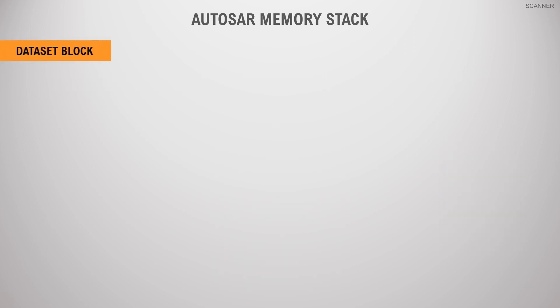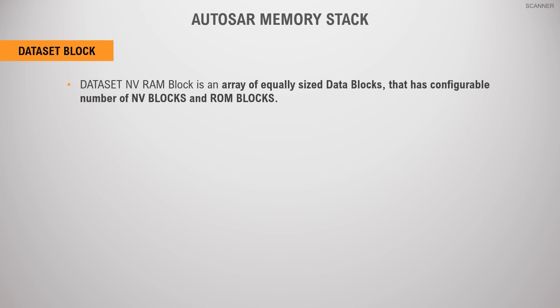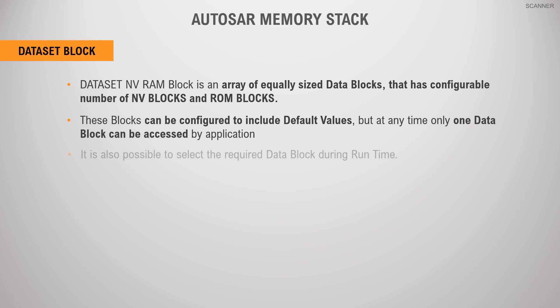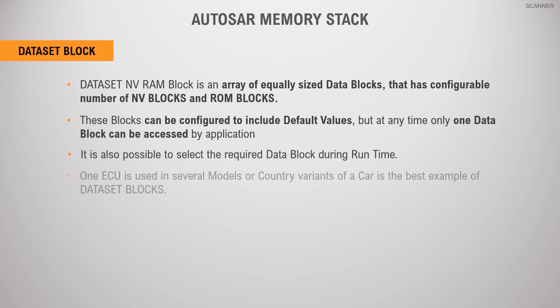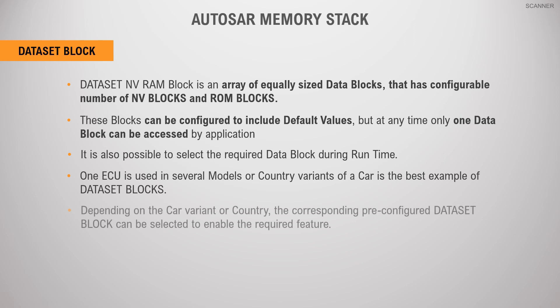The third type of block management is the dataset block. A dataset block is an array of equally sized data blocks that has a configurable number of NV blocks and ROM blocks. These blocks can be configured to include default values; however, at any time only one dataset block can be accessed by the application. It is also possible to select the required dataset block during runtime. The requirement to use the same ECU within different variants of the same cars in different geographical locations with different sets of features can be satisfied using this dataset block. Depending on the car variant or country, the corresponding pre-configured dataset block can be selected to enable the required feature.